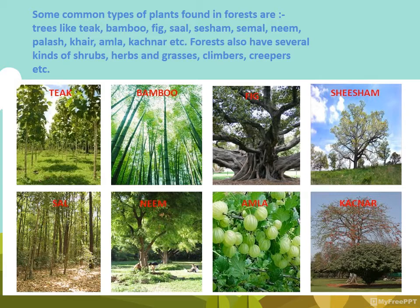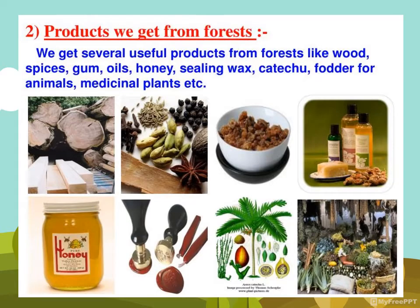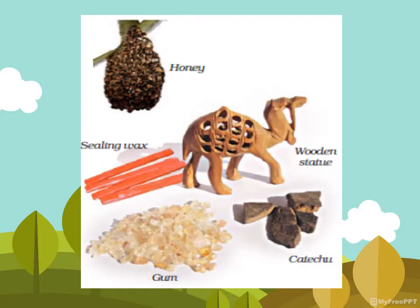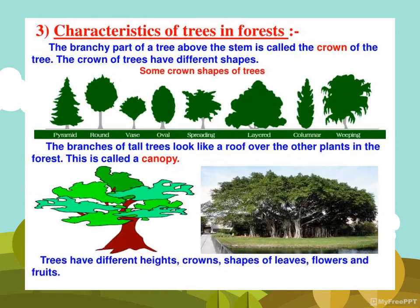Along with trees, different herbs, climbers, creepers, grasses, and plants are also found in the forest. The forest grows by itself — there is no need to plant trees, as the forest provides favorable environmental conditions so that plants can germinate and grow on their own. Products we get from forests include spices, gum, resins, oil, honey, wax, fodder, and medicinal plants.